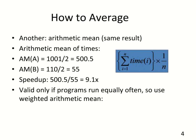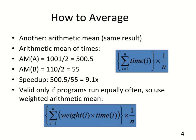This approach is only valid if the programs are equally important or run equally often. If they are not, you can use what's called a weighted arithmetic mean. The only difference is that you assign a weight to each benchmark, and when computing the weighted arithmetic mean, you include that weight as a term in the summation.